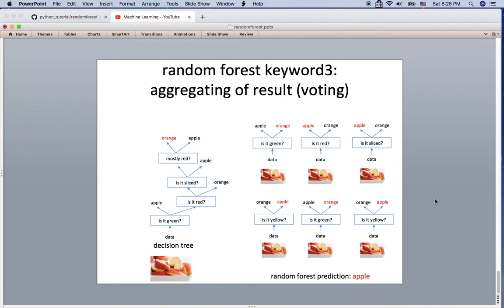So the third keyword you should remember of the random forest is aggregating of the result. We usually say it is voting. By the hard voting, we can say it is apple from the random forest. And with this aggregating with the boosting, boosting and aggregating, the short term for this one is bagging.